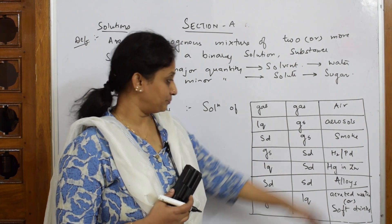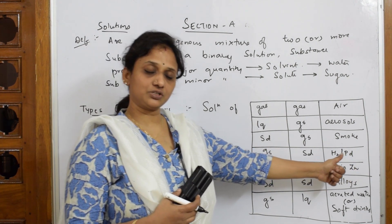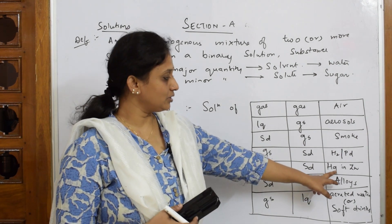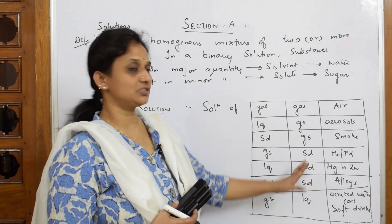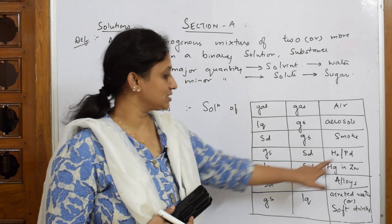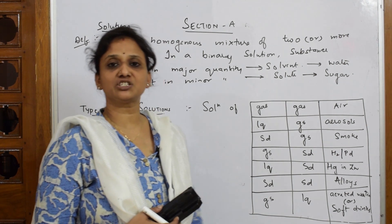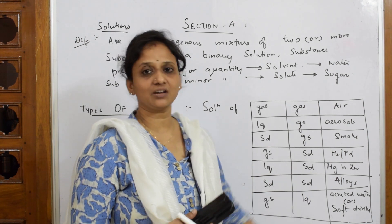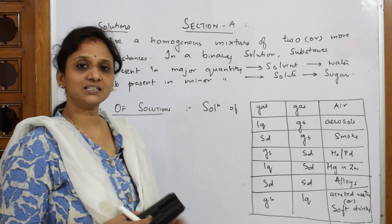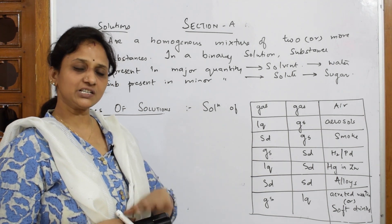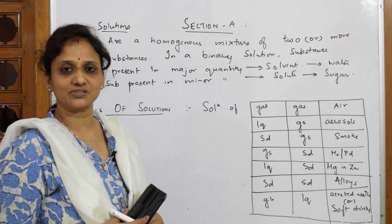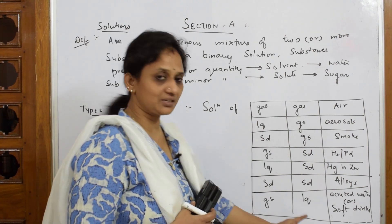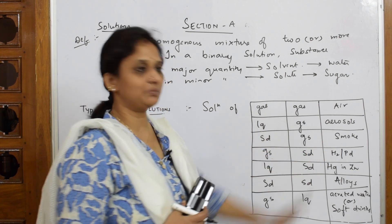Hydrogen gas on the surface of palladium metal is a gas-solid combination. Mercury in amalgamated zinc is liquid and solid — mercury is the liquid, zinc is the solid. Alloys are a combination of solid and solid metals. Gas and liquid gives aerated soft drinks, where carbon dioxide under pressure is incorporated into the liquid drink.